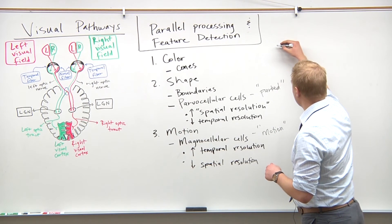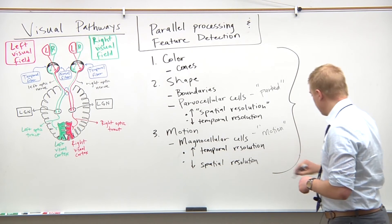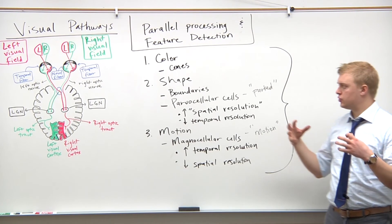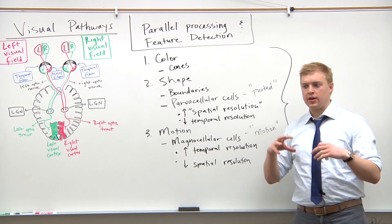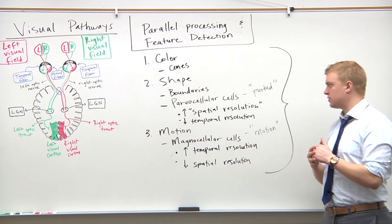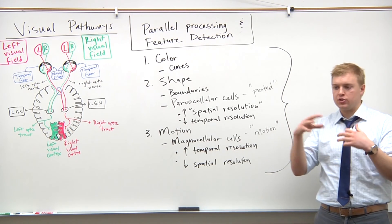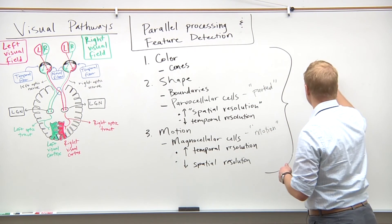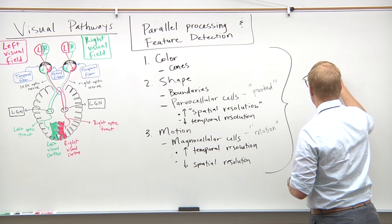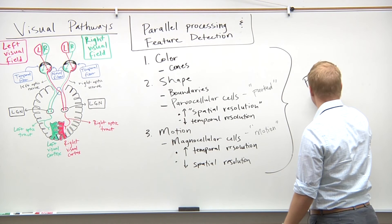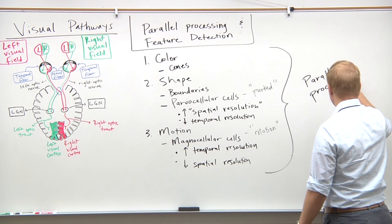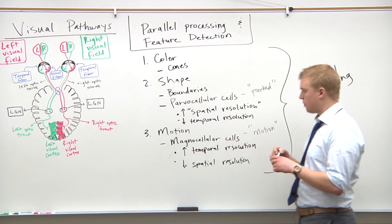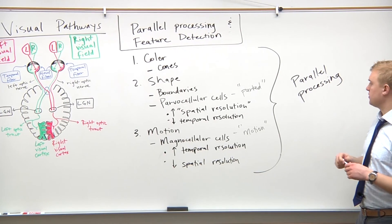And then just the ability for us to simultaneously process color, shape, and motion, and then be able to relay this to our memory stores and be able to put together the pieces of the puzzle and figure out what we're looking at - is it a bird, a dog, a person, whatever? Being able to do this at the same time is what parallel processing is referring to. So we're processing multiple things at the same time. So again, these are just the different features that we're going to be detecting of objects, and being able to do that at the same time is the parallel processing.